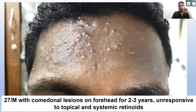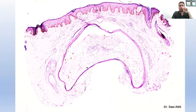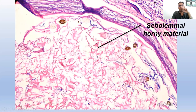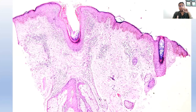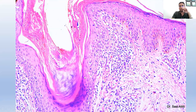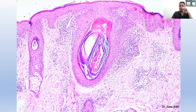Case three: a 27-year-old male with comedonal lesions of the forehead for two to three years, unresponsive to topical and systemic retinoids. Typical steatocystoma histologically — multiple hair shafts and sebolemal material, no keratin. Unusual presentation. Case four: a 35-year-old male with a two-year history of multiple itchy comedonal papules, no true comedones, with occasional lesions on the scalp and groins. Histologically, a micro comedone with lichenoid inflammation — the comedone is still forming, a dilated infundibulum but not yet a cyst. Deeper levels show two comedonal cysts with lichenoid inflammation. Is this acne or something else?